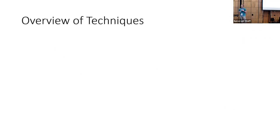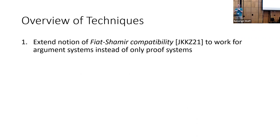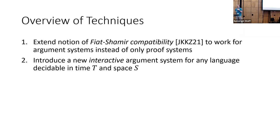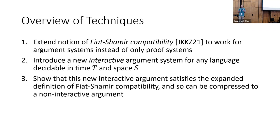To give a brief overview of the techniques, this happens in three steps. First, we take a notion previously defined called Fiat-Shamir compatibility and show how to make it work for argument systems, not just proof systems. We then introduce a new interactive argument that works for any language decidable in time T and space S. Finally, we show this new interactive argument satisfies our definition of Fiat-Shamir compatibility for arguments, and that's enough to compress it into a non-interactive argument, which gives us our final result.